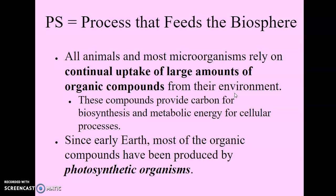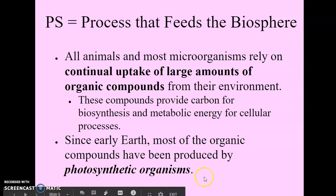We usually refer to autotrophs as the producers. Almost all plants are autotrophs — the only nutrients they really require are water and minerals from the soil and carbon dioxide from the air. Specifically, we would call them photoautotrophs, because they are organisms that use light as their source of energy.